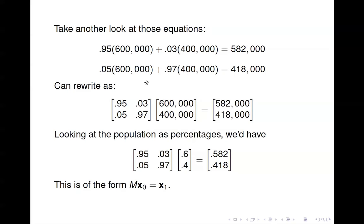Another way to look at it: notice we have 600,000 times the vector (0.95, 0.05) and 400,000 times the vector (0.03, 0.97). That looks like a linear combination of vectors, so we can rewrite it as a matrix times a vector. The linear combination is 600,000 times the first column plus 400,000 times the second column. We can also look at it as percentages using population vector (0.6, 0.4) to get the population vector for a year from now.